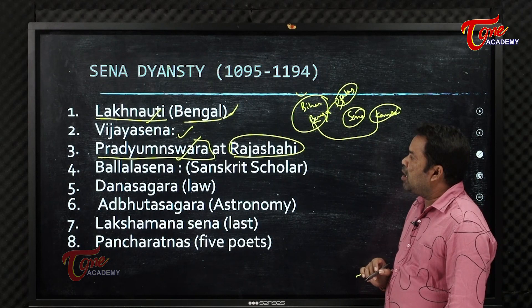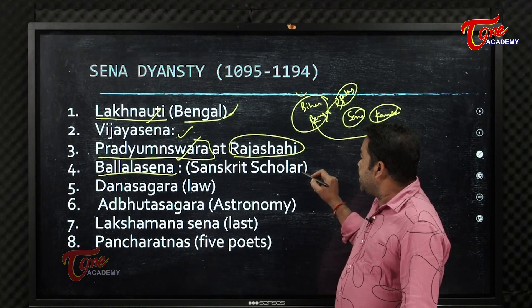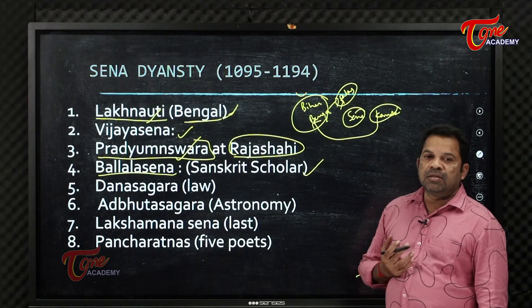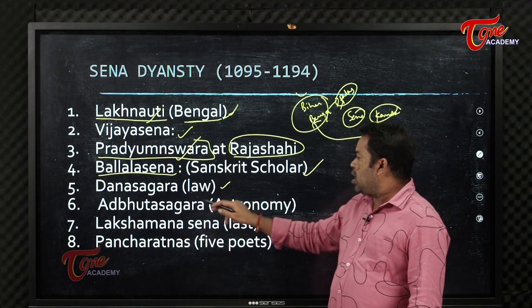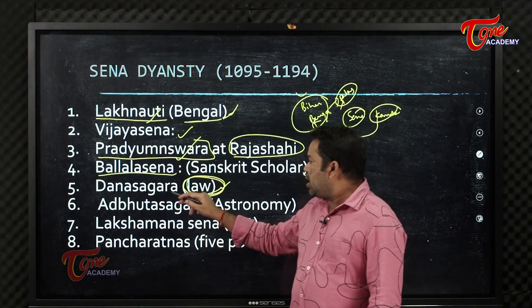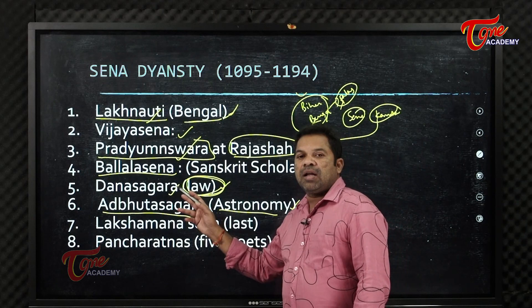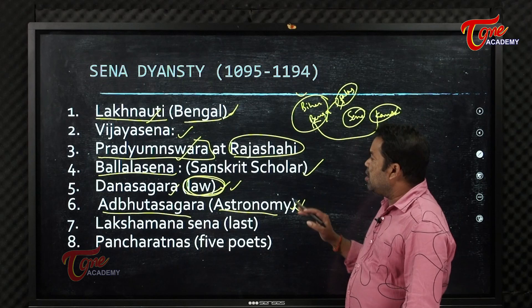The next important ruler was Ballala Sena. He was not only a great ruler but also an eminent Sanskrit scholar. He wrote several books including Danasagara, a digest of law, and Adbhutasagara, a book on astronomy.